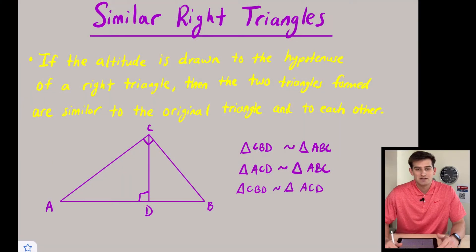Hello everyone, in this video we're going to talk about similar right triangles. So what does a right triangle look like when we can have similar right triangles? Let's read here on the screen. It says if the altitude is drawn to the hypotenuse of a right triangle, then the two triangles formed are similar to the original triangle and to each other.